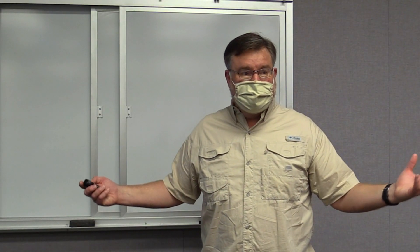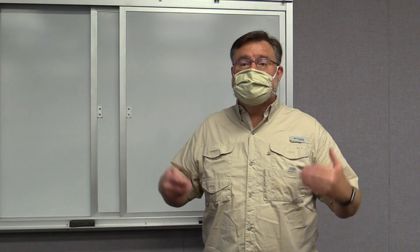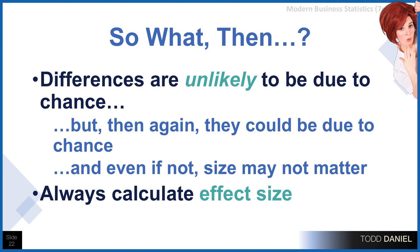So what does it tell us then? That these differences were unlikely — unlikely to be due to chance. But maybe they could be due to chance. And even if they're not due to chance, the size of the difference between the means really does matter. So our solution, therefore, is whenever we report statistical significance or not, we should also report an effect size. What we're going to learn about next is what is an effect size, how do we calculate it, and why does it matter?